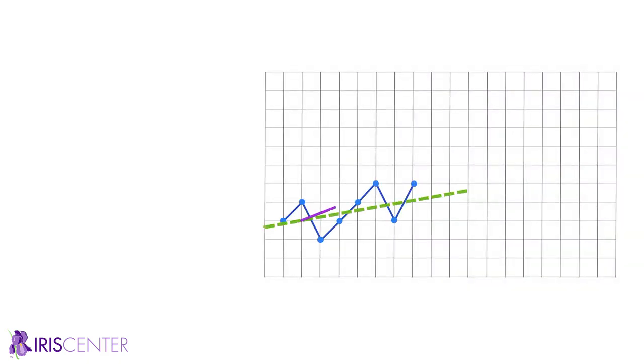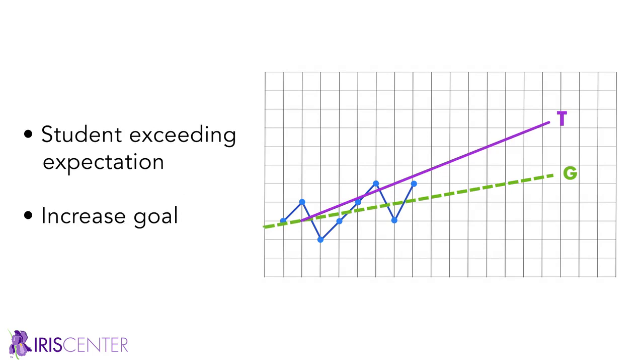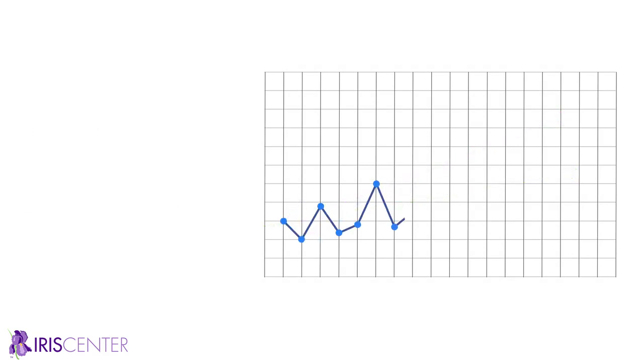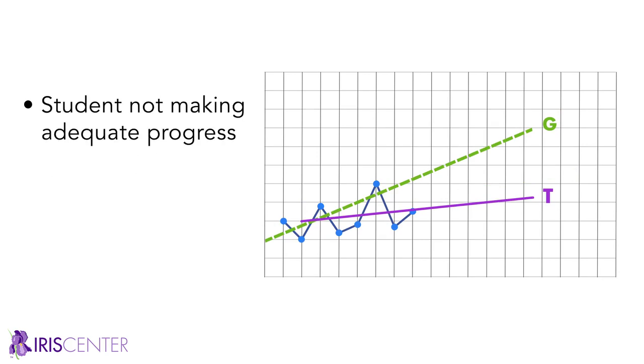After using the Tukey method to graph a trend line, you can use a trend line analysis to evaluate student performance. If the trend line is steeper than the goal line, the student's performance is exceeding expectation and a more ambitious goal is needed. If the trend line is flatter than the goal line, the student is not making adequate progress. As such, the educator should implement a different instructional approach and monitor the student's progress to determine if the approach is effective.